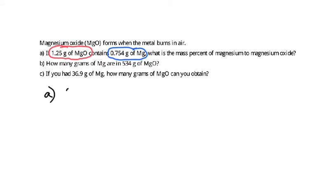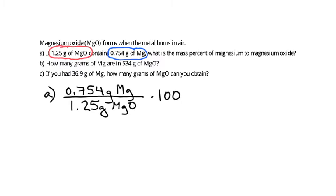So we have 0.754 grams of magnesium. That's one of the components of our compound here. We're going to divide it by the total amount of the compound. We have 1.25 grams of magnesium oxide. And in order to get that as a percent, we multiply it by 100. So the mass percent of magnesium in this compound is equal to 0.754 divided by 1.25 times 100 gives us 60.3%.